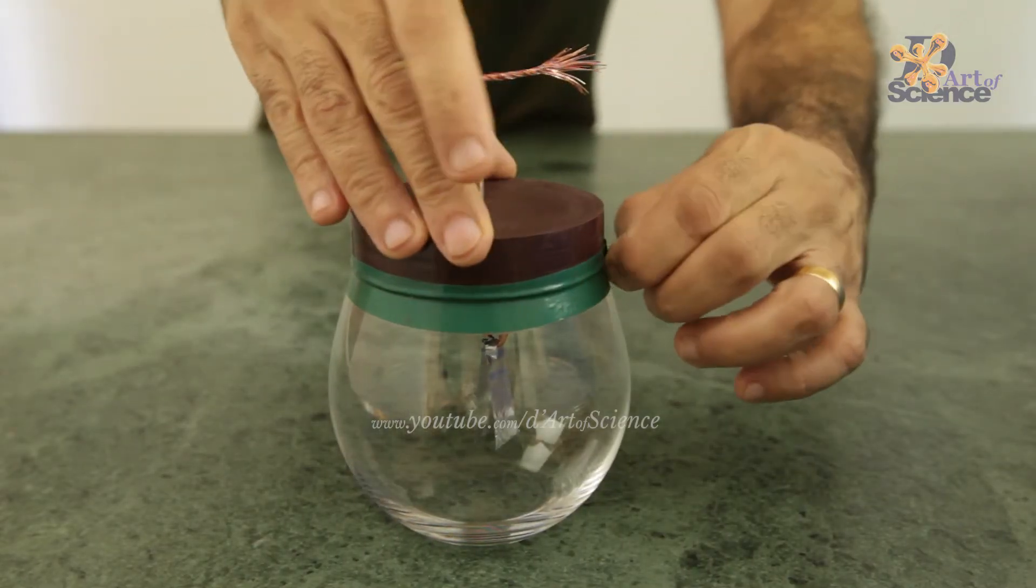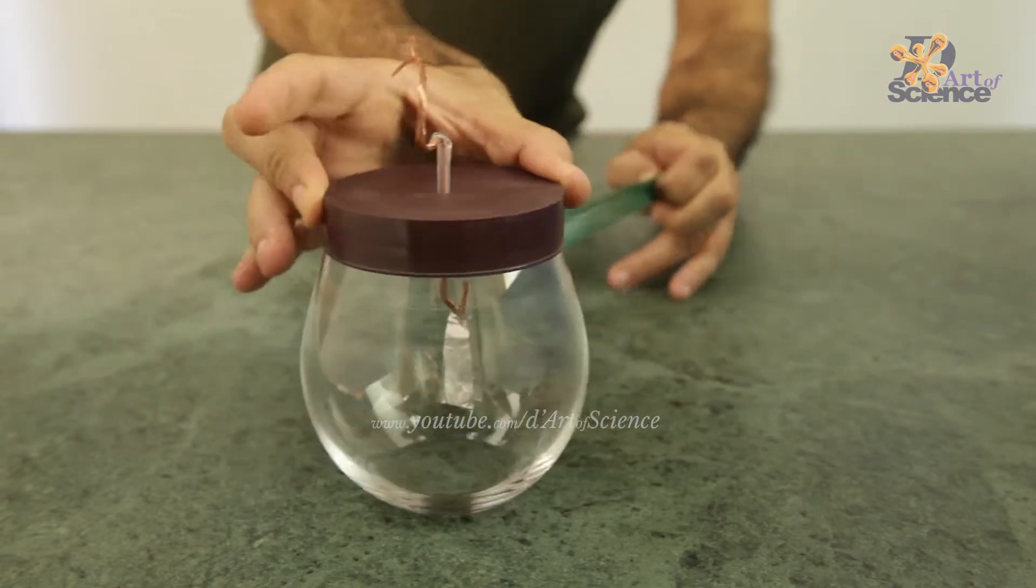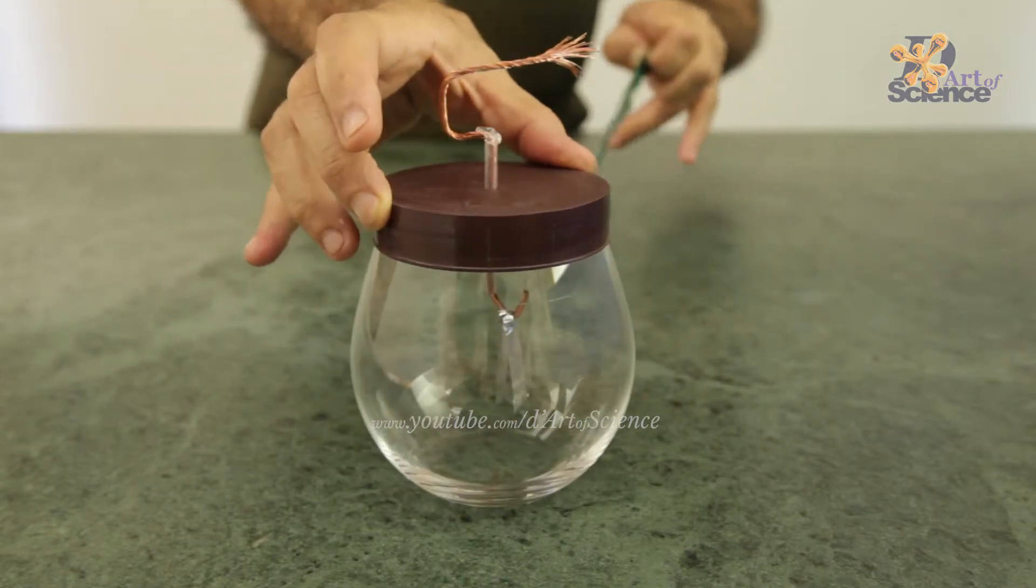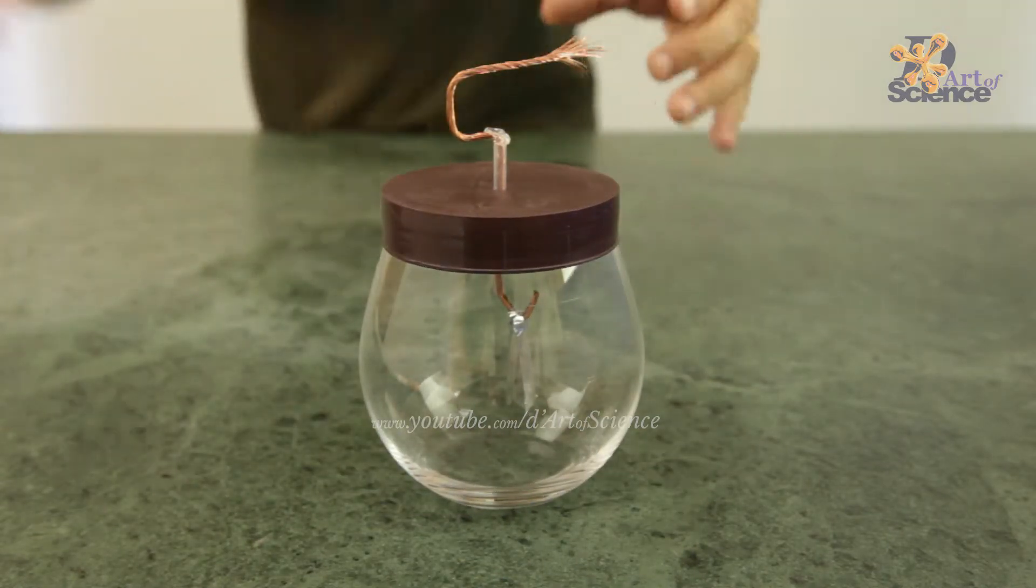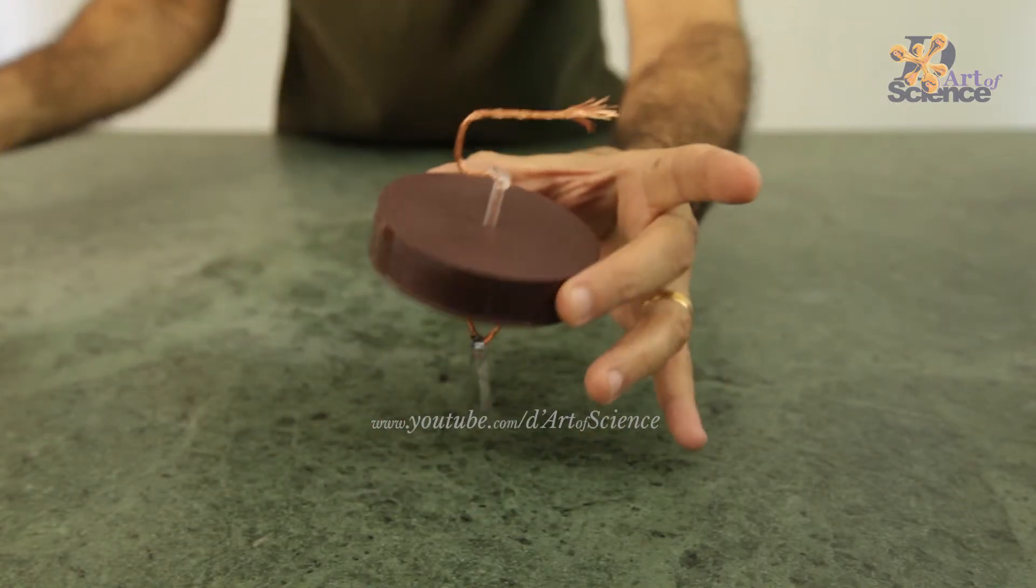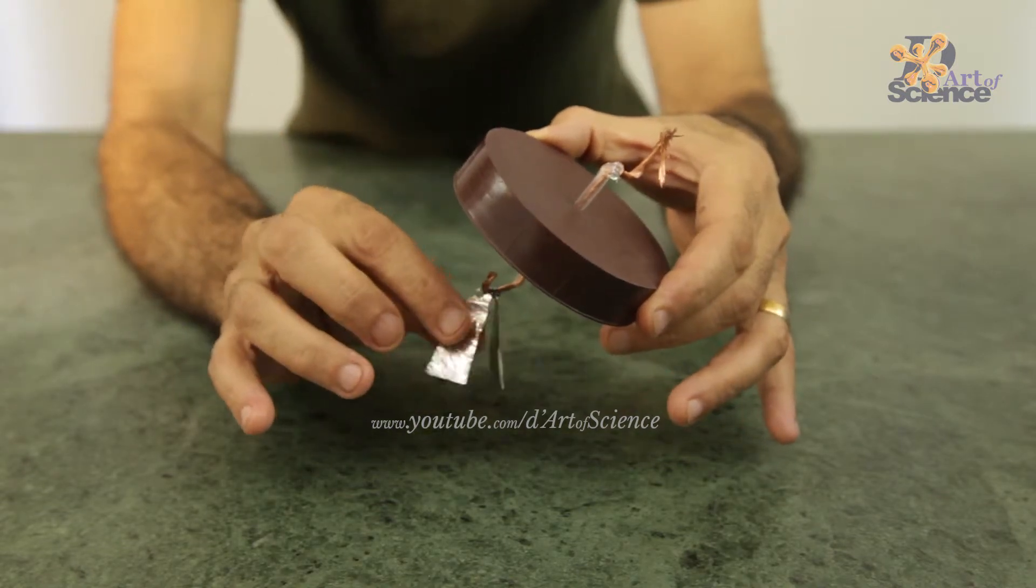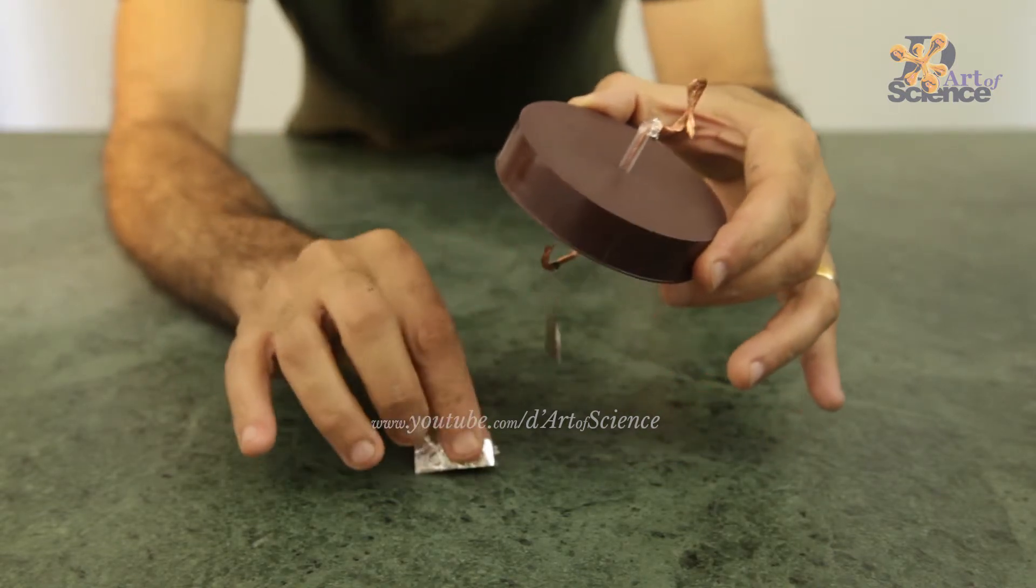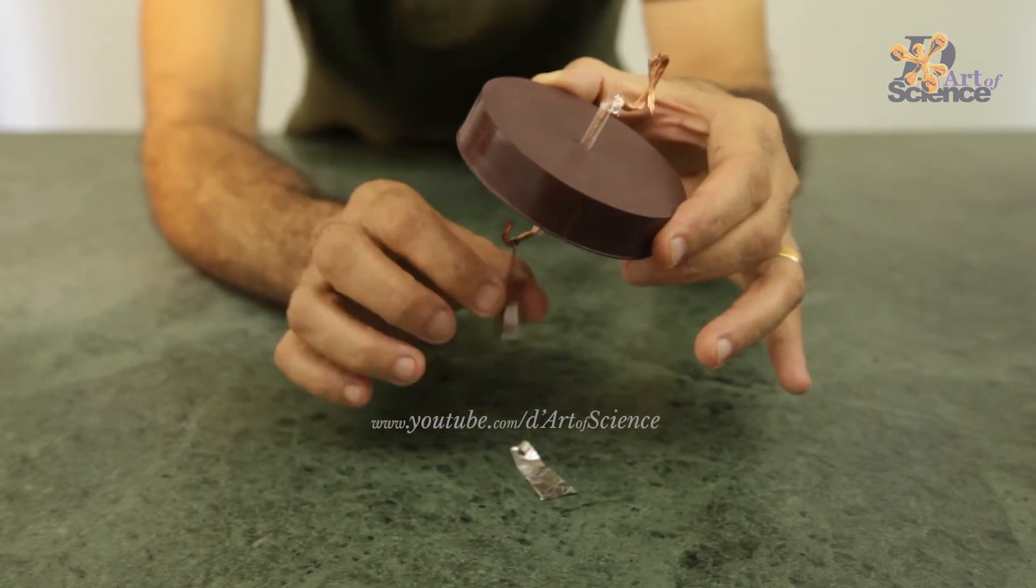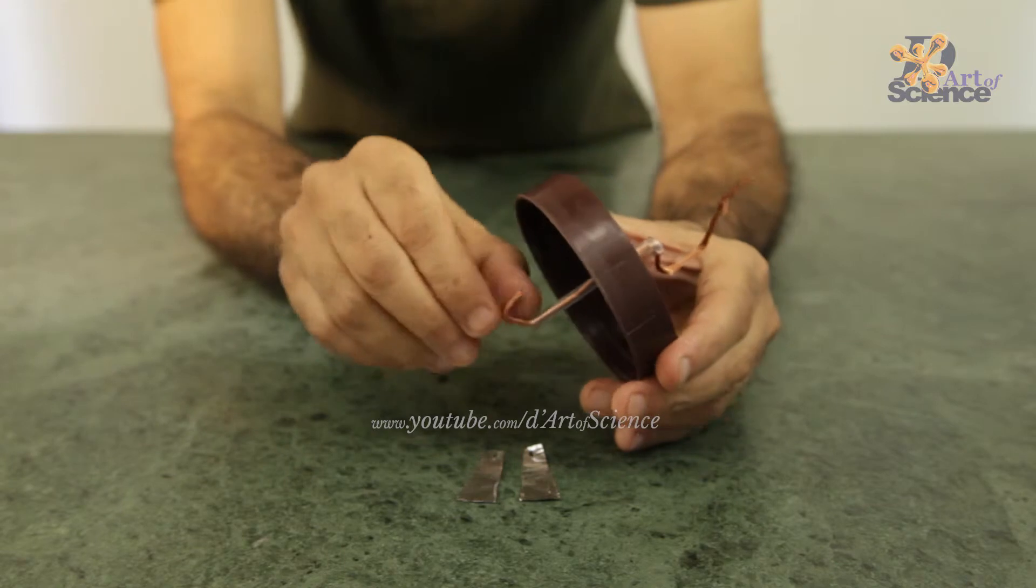The tape is put around the cap so that it becomes airtight because we don't want any interaction happening from anywhere except the wire on the top. Once I remove the cap, you can see it's a large sized normal drinking glass. Here are two small leaves that are made from foil and these hang from the bottom of the wire.